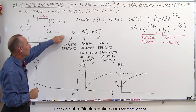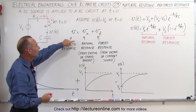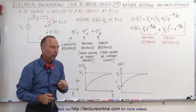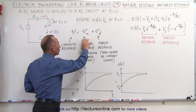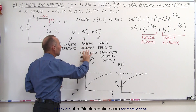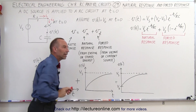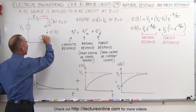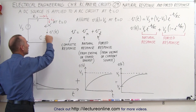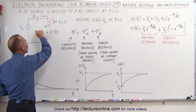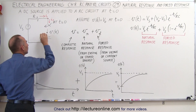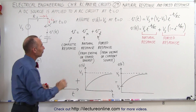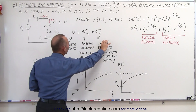The total response is the sum of the natural response and the forced response of the circuit. The natural response comes from any existing or stored energy in the circuit. Since there were charges on the capacitor, there was energy on the capacitor, and the response of the circuit due to that energy is what we call the natural response.